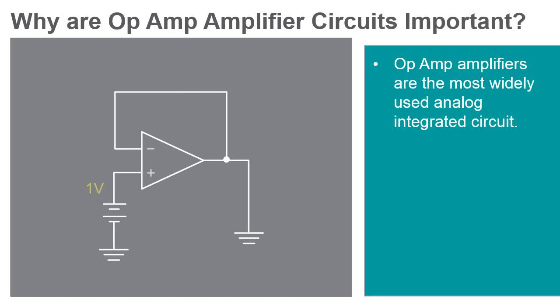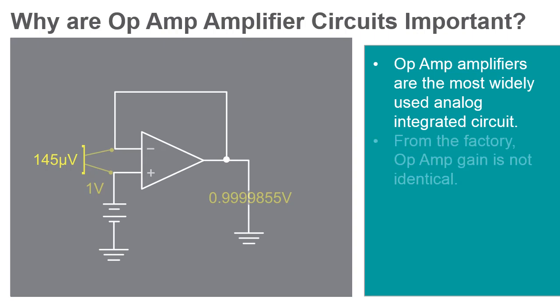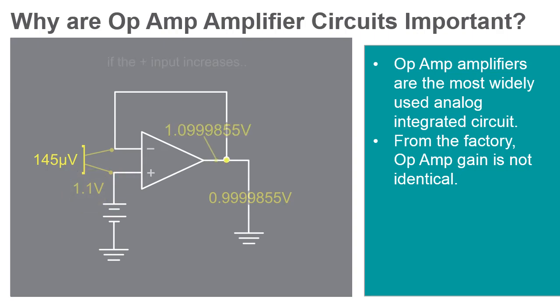Operational amplifiers are the most widely used analog integrated circuit. Some applications, such as comparators, do not require closed-loop feedback as part of their function, but for most use cases, the gain of the op-amp must be controlled. In these instances, some form of output feedback is required. An important advantage of negative feedback in an op-amp circuit is that the specific voltage gain of the op-amp is no longer critical in determining the gain of the circuit.